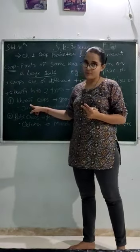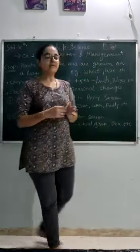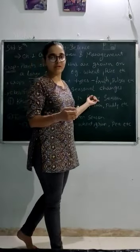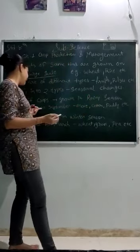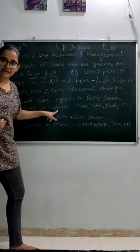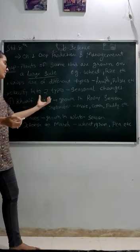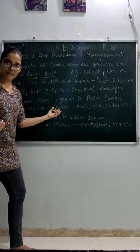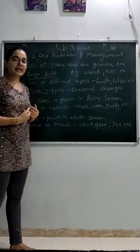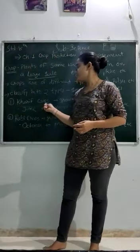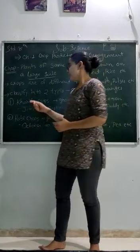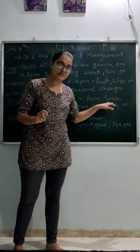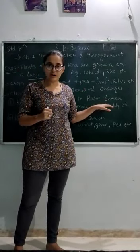First, Kharif crop. Kharif crop means the crop or the plant that grows in rainy season. Rainy season, when is it? June to September. So the crop that grows in rainy season, and that season's duration is June to September, that crop we can call it as a Kharif crop. Got it? Again, Kharif crop means the crop which grows in rainy season. Why? Because they require high amount of water.